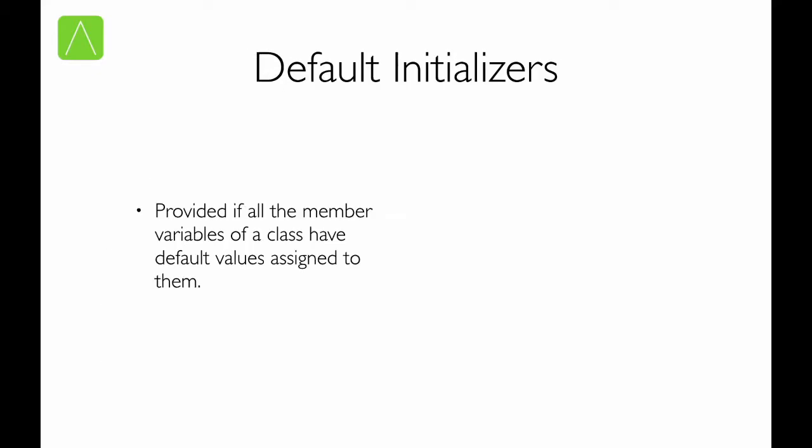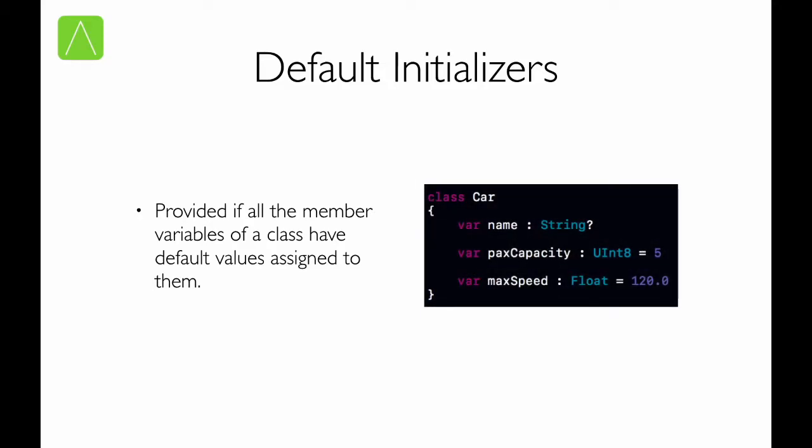If we declare a class where the stored properties have a default value provided, then Swift will provide default initializers. Take the example shown. We have a class Car with three properties: name, passenger capacity, and max speed. Passenger capacity and max speed have default values of 5 and 120 provided respectively. Since name is an optional, it will automatically get the initial value nil. In such a case, a default initializer will be provided to class Car as default values have been assigned to all member variables.